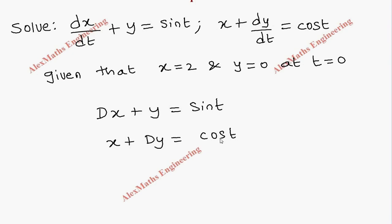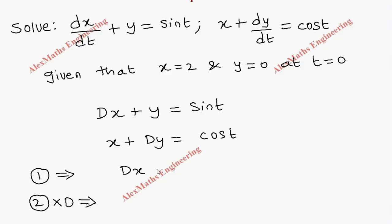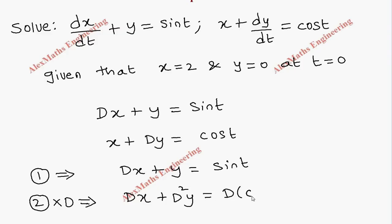Now we have to eliminate either x or y. For eliminating x, we have to make the same coefficient. This is Dx and here it is only x. So we will write the first equation as it is, but for the second equation, I am going to multiply by D on both sides. So the first equation is Dx plus y equal to sin t, and multiplying the second equation by D, we get Dx and D²y equal to D(cos t).